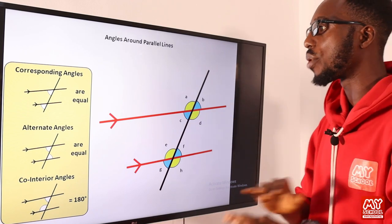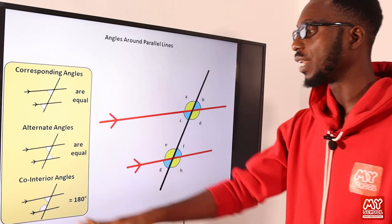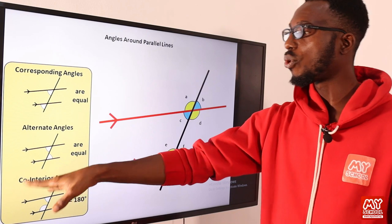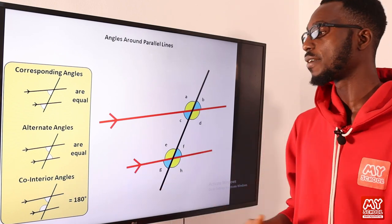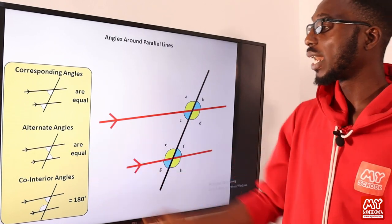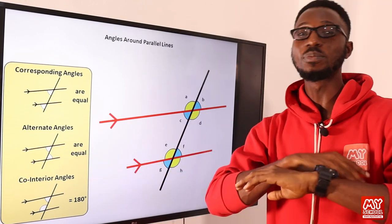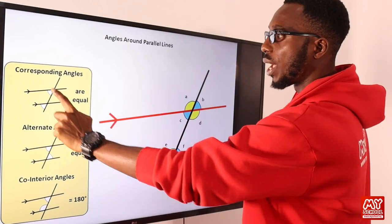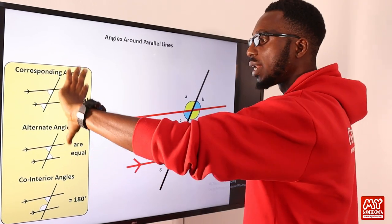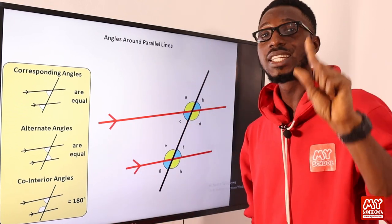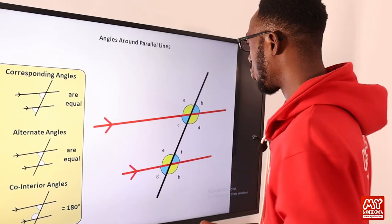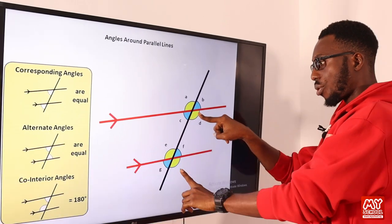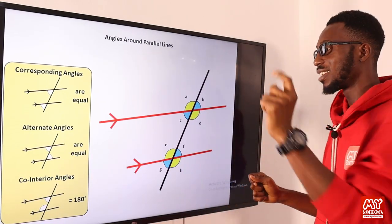Basically we have the corresponding angle, the alternate angle, and the co-interior angle — also referred to as the consecutive angle, which can be interior or exterior. Alternate can also be interior or exterior. Looking at this diagram: corresponding angles are equal, alternate angles are equal, but consecutive angles are supplementary — they add up to 180 degrees. For example, A to E is a corresponding angle, D to H is a corresponding angle.